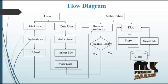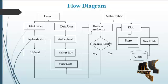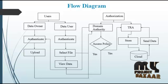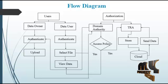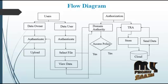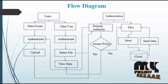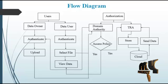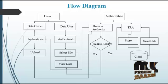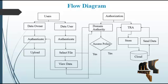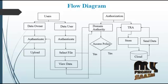After the file is encrypted, they send the request to the authorization people to store the data in the cloud. The domain authority first receives the upload request, checks the access policy, and then forwards it to the DRA. After checking all the details, the file will be stored in the cloud server.